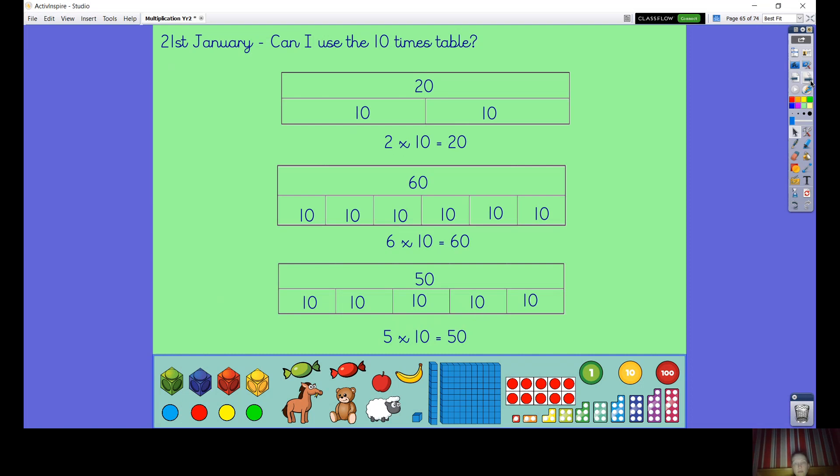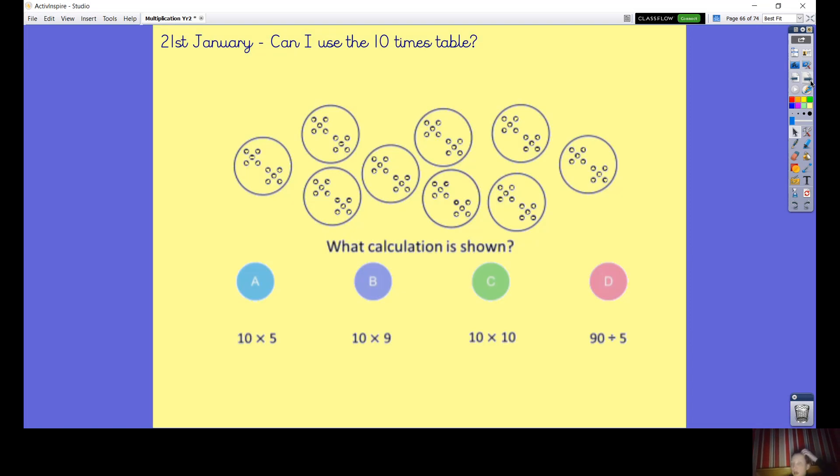Here is our thinking activity for today. Have a look at this picture. How many groups have we got? How many in each one? Which one of these is shown? Let's have a look. Let's start with counting the groups. How many groups have we got? We've got 1, 2, 3, 4, 5, 6, 7, 8, 9 groups.